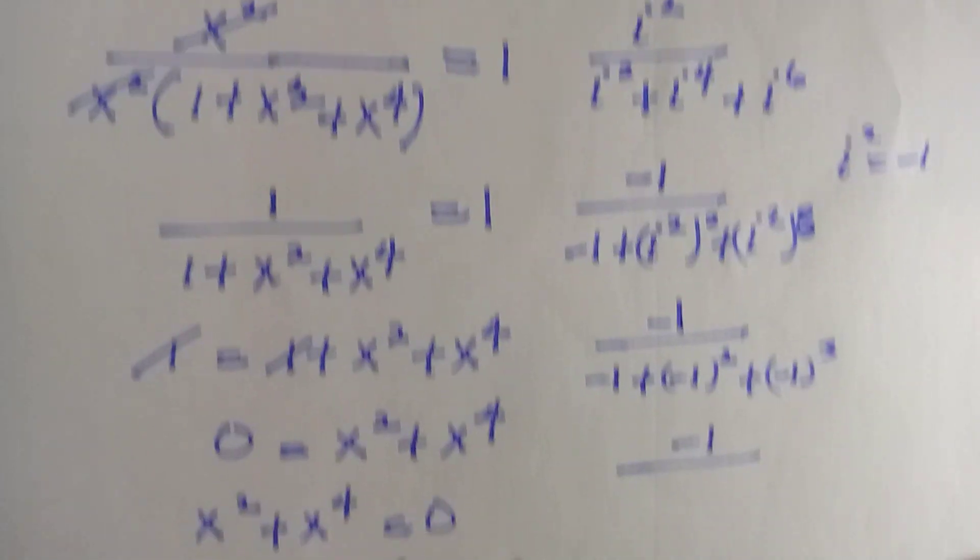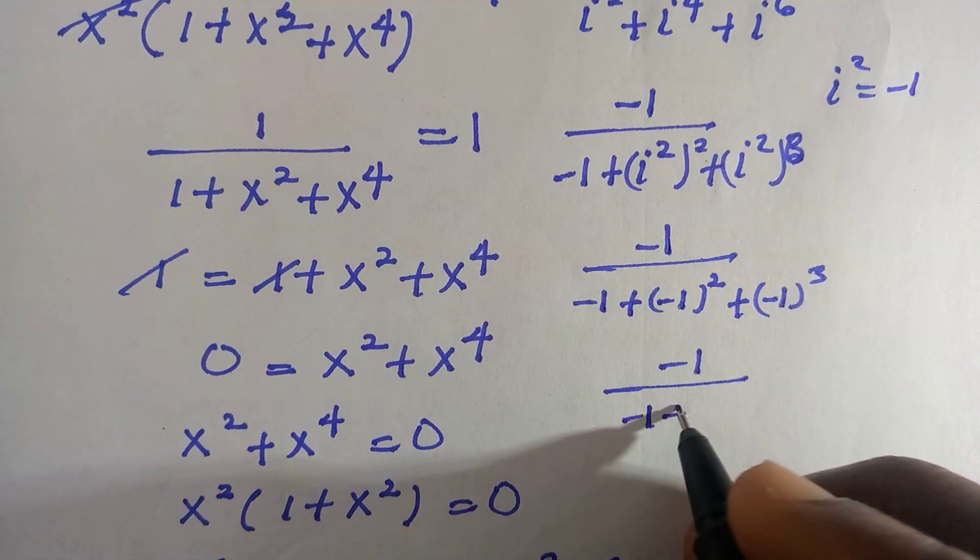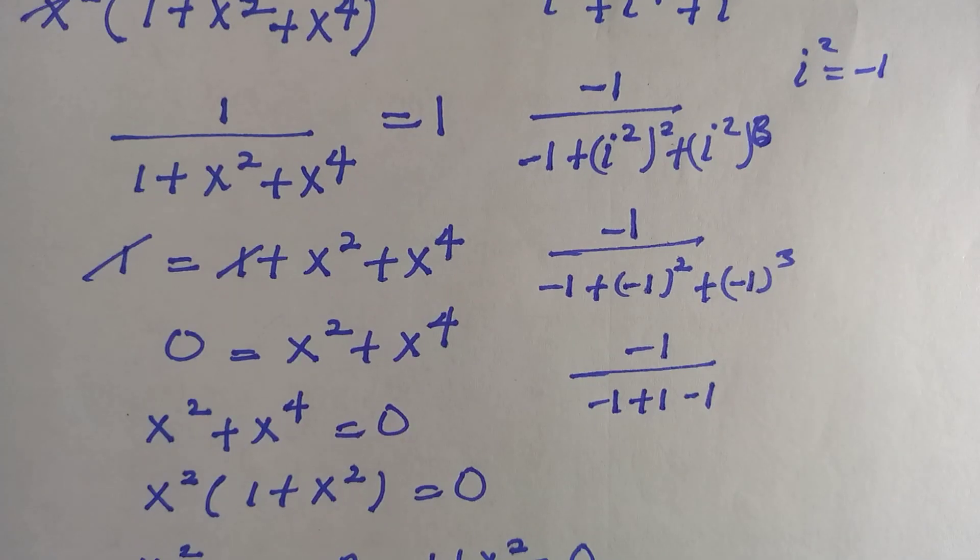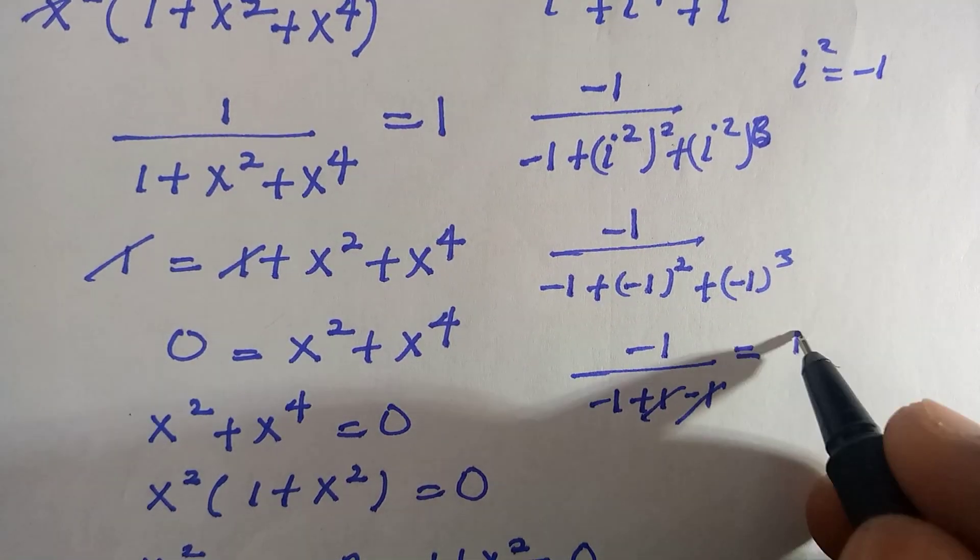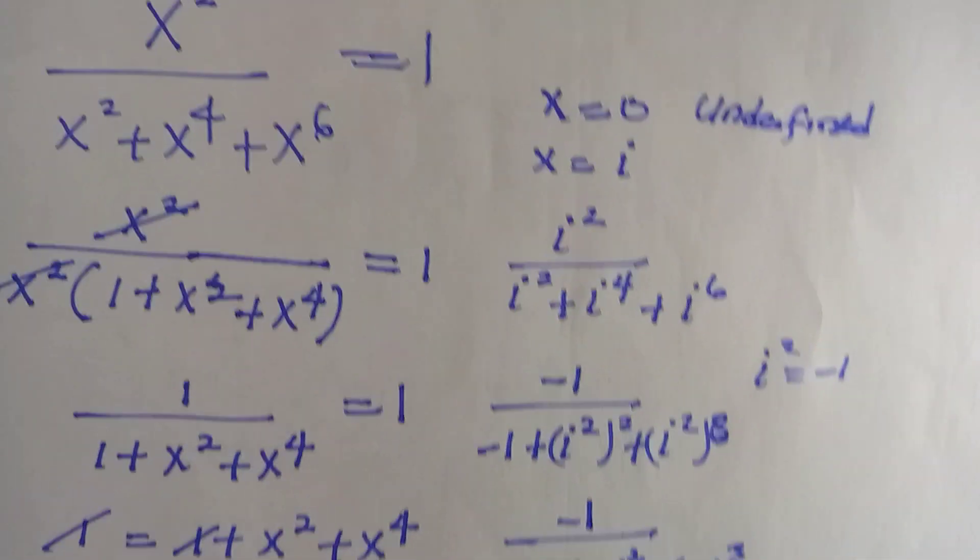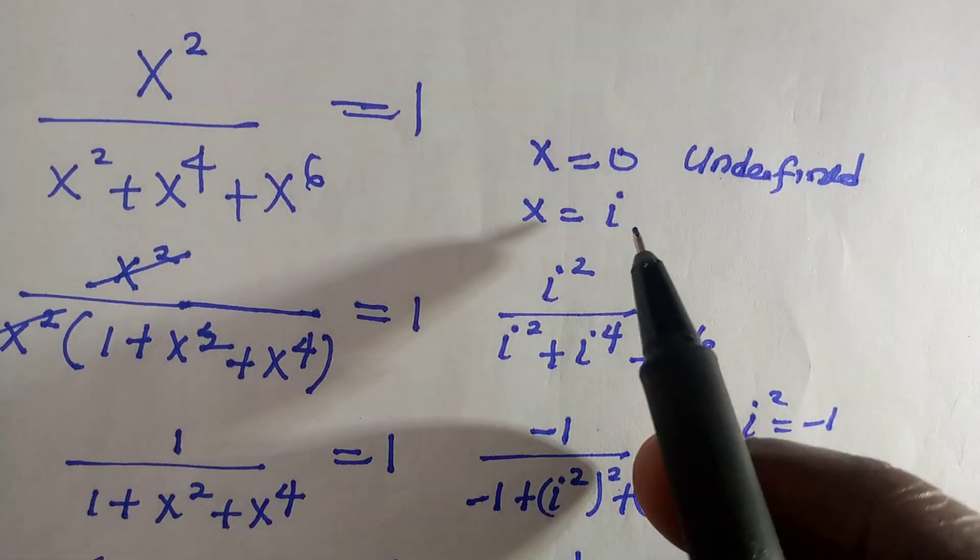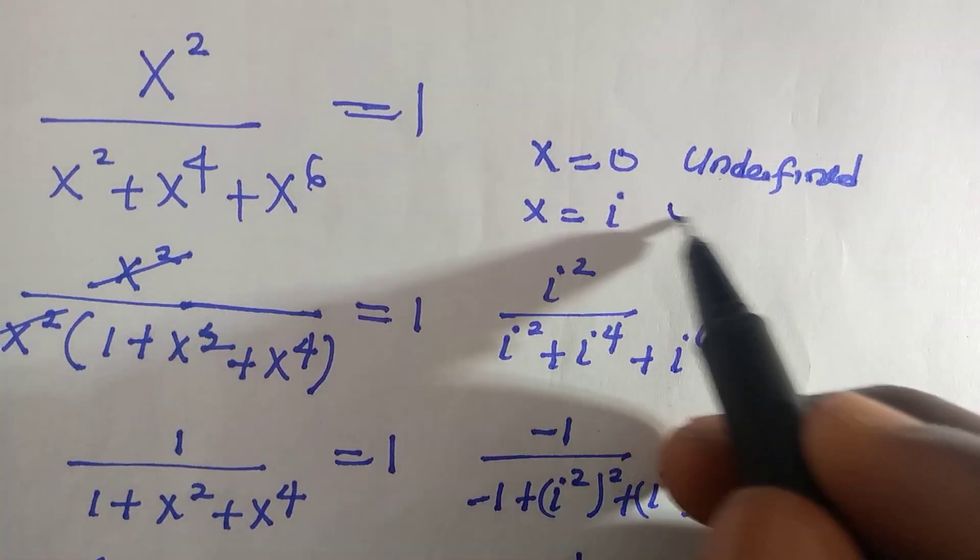And we have negative 1 divided by negative 1 plus 1 minus 1. So if this comes through, we have negative 1 divided by negative 1, that is 1. So which means at x equals to i, it satisfies the equation.